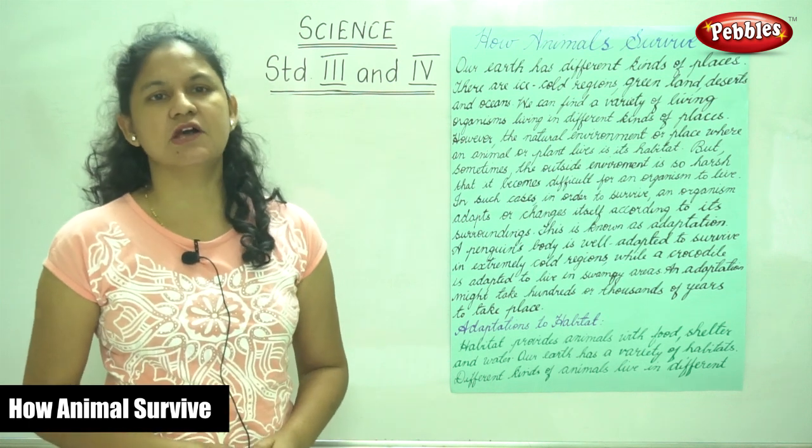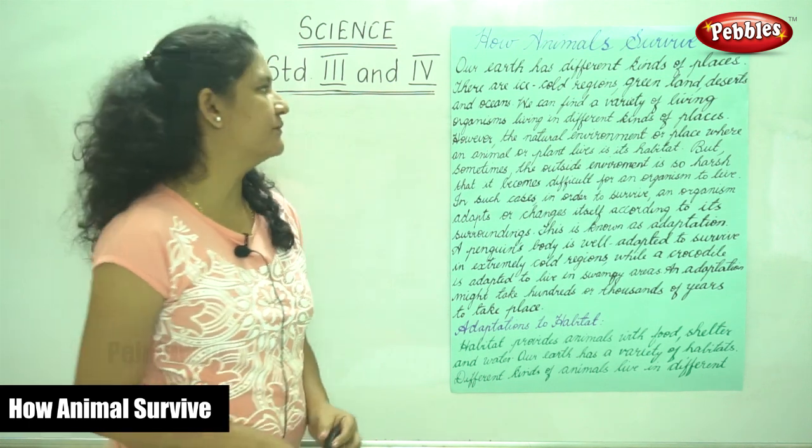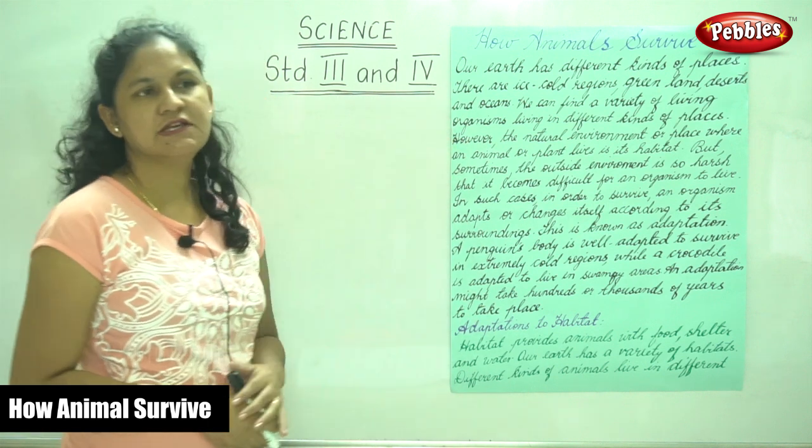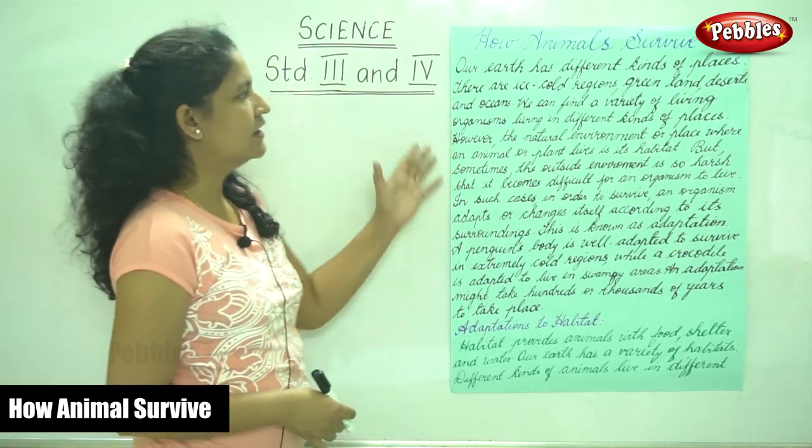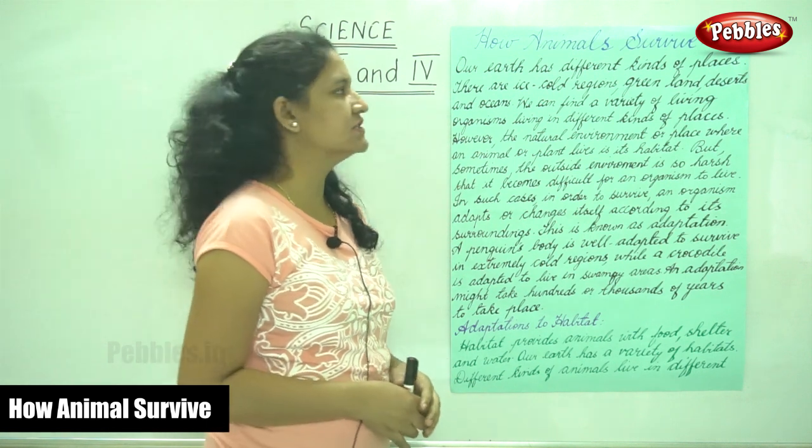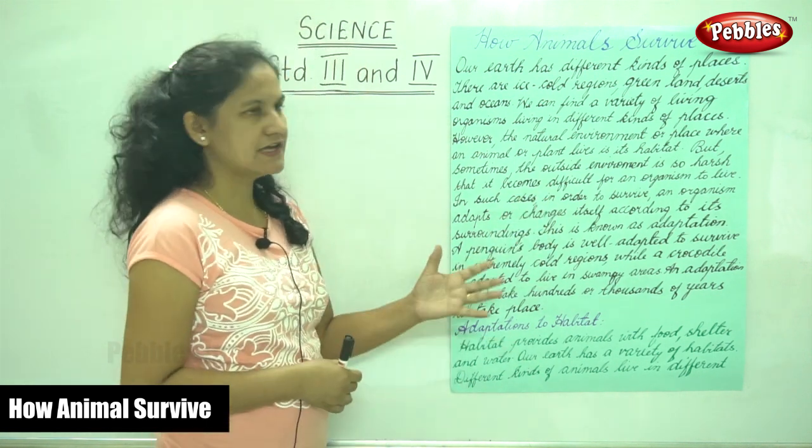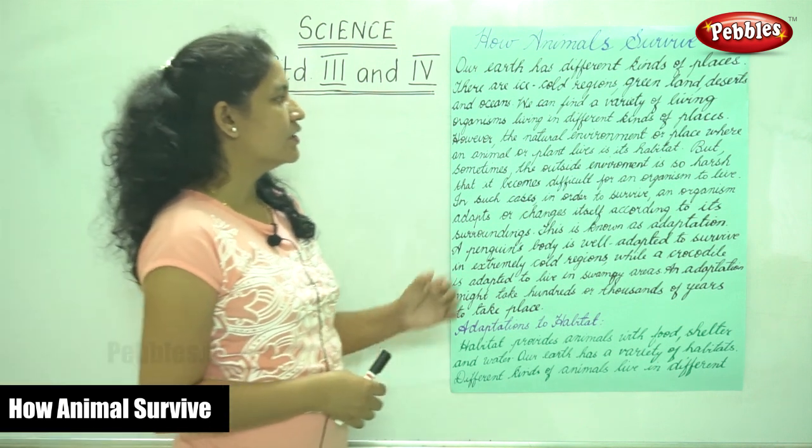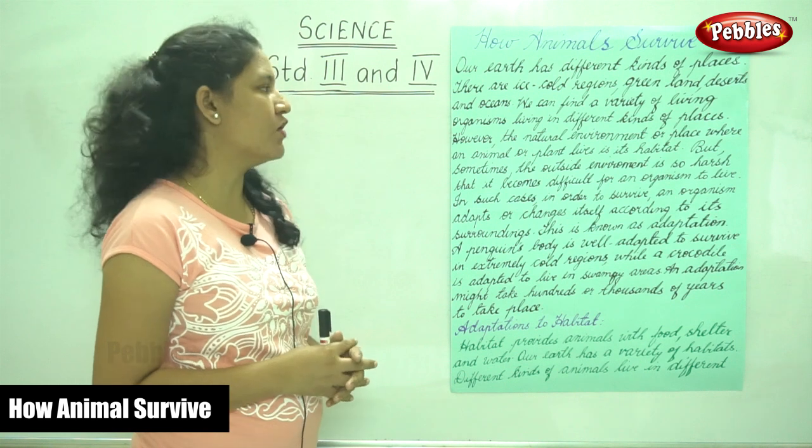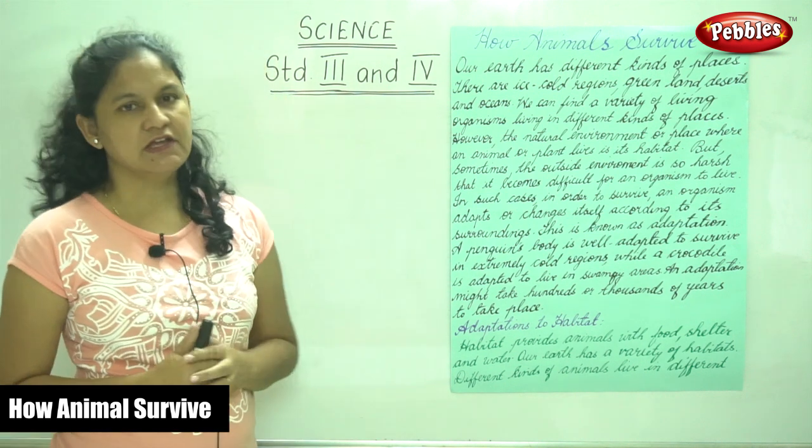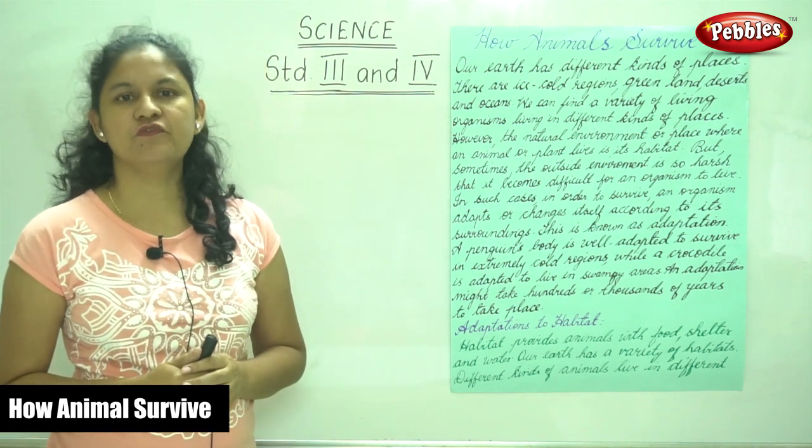Now we are going to talk about how animals survive. Our earth has different kinds of places. There are ice cold regions, green land, deserts and oceans. We can find a variety of living organisms living in different kinds of places.